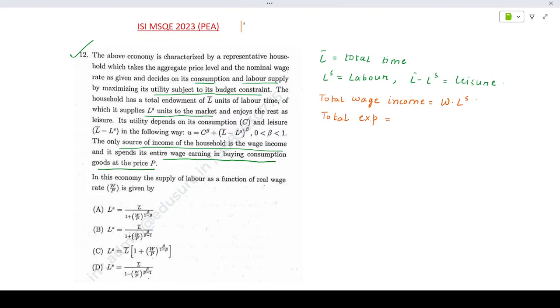He consumes C units of consumption at the market price P. That means his budget constraint is P times C should be equal to W times LS, or C can be written as W by P times LS.